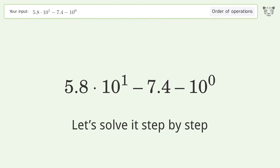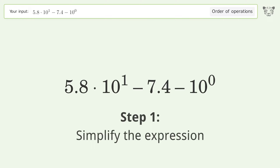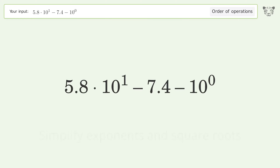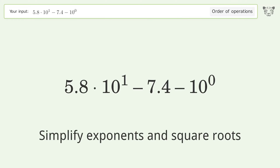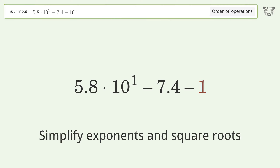Let's solve it step by step. First, simplify exponents and square roots: 10 to the power of 0 equals 1, and 10 to the power of 1 equals 10.